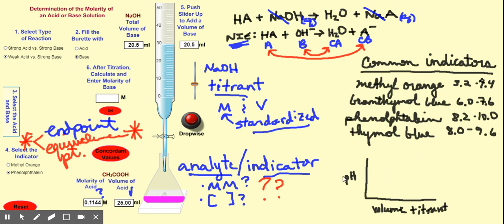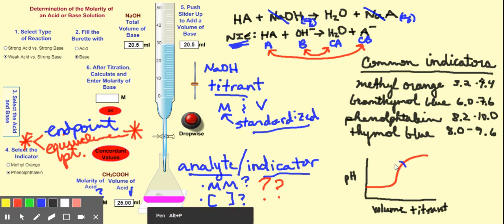To choose the correct indicator, we use a pH curve. If I were to test the pH inside the flask and record it as I'm adding volume of base, especially with a weak acid as the analyte and a strong base as the titrant, I get a curve with a characteristic shape. We're going to dive deep into titration curves in the next video, but I want to give you an introductory look here.